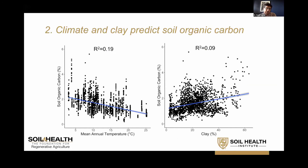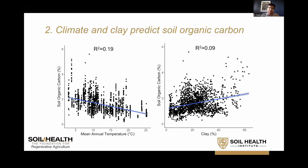We can use our dataset to look at some of those same predictors. Soil organic carbon versus mean annual temperature explains about 20% of the carbon, and soil organic carbon versus clay explains about 10%. There's a lot of variability around those lines, which we'll get back to when we talk about management. The other indicators don't tend to have quite as strong predictability with these climate and soil texture variables.